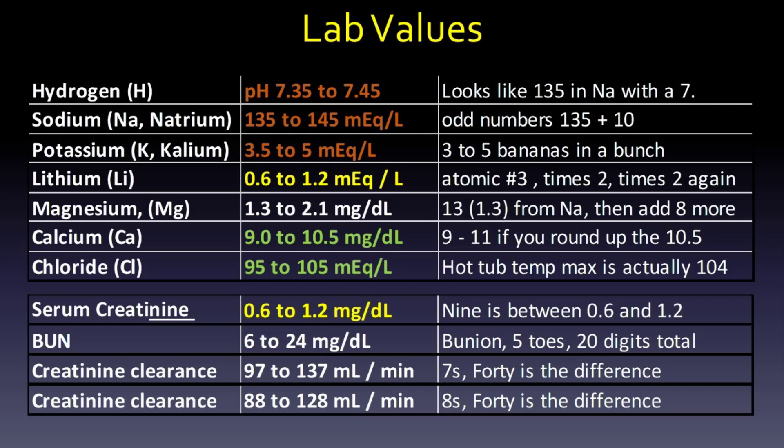I've heard 95 to 105 is a hot tub temperature for chloride, but be careful — the maximum is actually 104. For BUN, if you put it right under creatinine, it retains that 6, gets rid of the decimal, and you double the 12 to get 24. So generally I see 6 to 24 milligrams per deciliter. But I've also seen the mnemonic where you've got bunions on your five toes and 20 digits total with hands and feet — so 5 to 20 milligrams per deciliter for BUN. I've seen both.